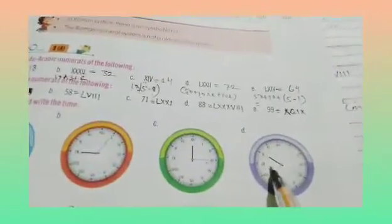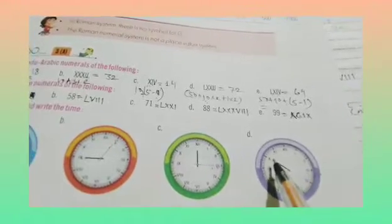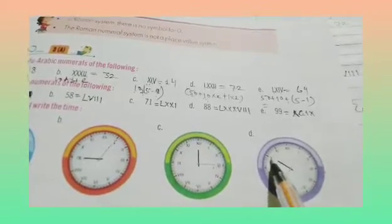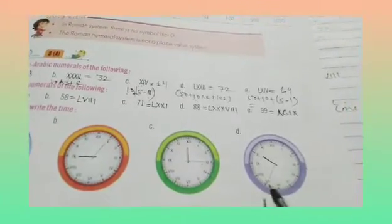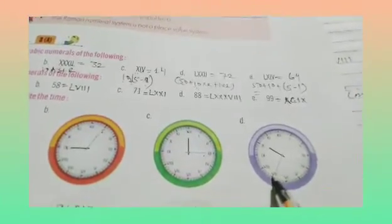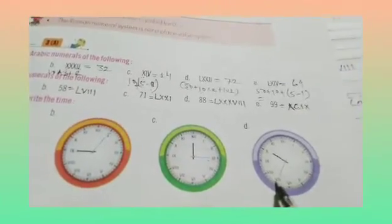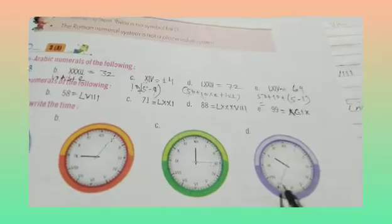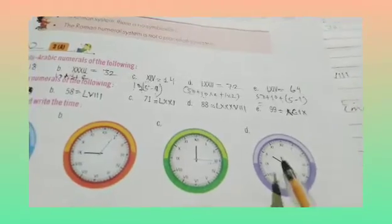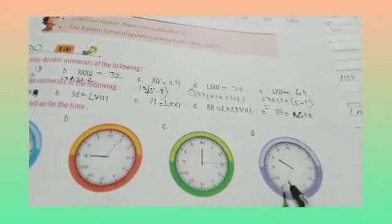Part D: one hand of the clock is at 10 and the other hand of the clock is at 7. So 7 into 5 is 35, giving us 10:35.